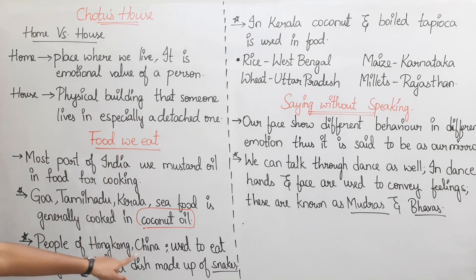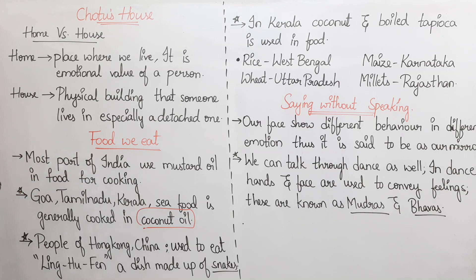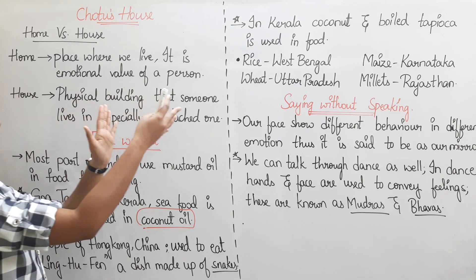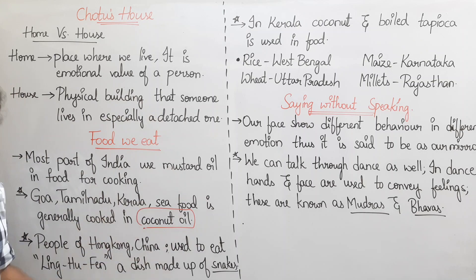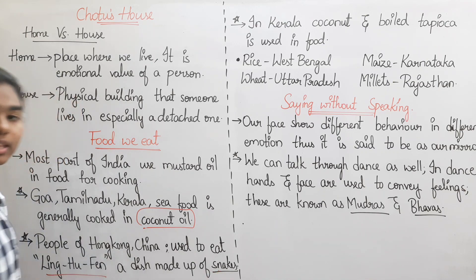People of Hong Kong and China used to eat Linghu Fen, a dish made up of snakes. This is a popular dish among people there. Linghu Fen is a dish prepared from snakes.